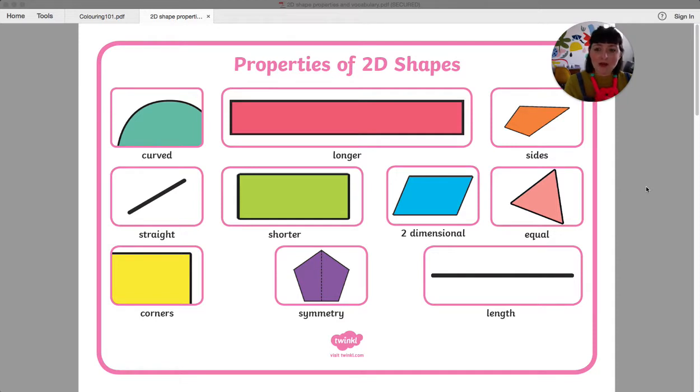We can also look at whether the sides are curved. I wonder if you know any shapes that have a curved side? Many of the shapes that we know have straight sides.